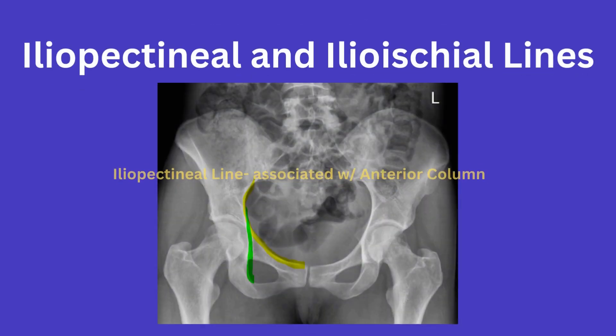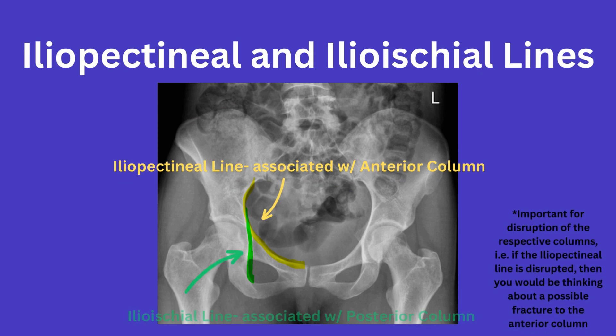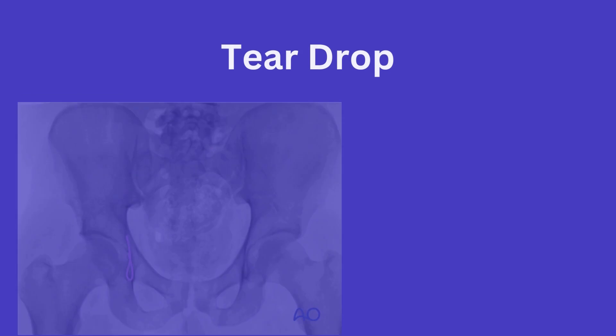Next you have the iliopectineal line, which you can see here, and the ilio-ischial line, which you can appreciate here. These lines are only appreciated on the AP view of the pelvis and represent the anterior column and the posterior column respectively. I will go over the columns in a future video, but understanding this relationship between the lines will suffice for now.